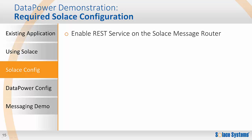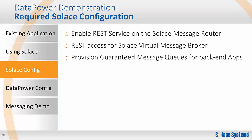Let's now look at the Solus configuration. This consists of enabling the REST service both on the Solus message router globally and within the Solus virtual message broker. Second, there is configuration to support persistent messaging, including the durable queues for the back-end applications. And finally, there is some JNDI configuration to allow JMS applications to successfully connect to Solus and bind to their persistent messaging queues.